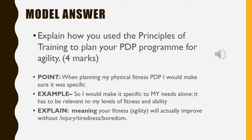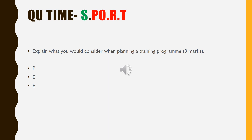Here's your model answer for using the command word 'explain.' The question is: 'Explain how you use the principles of training to plan your PDP program for agility' — or flexibility or speed. Your point: when planning my physical fitness PDP I would make sure it was specific. Your example: I'd make it specific to my needs alone — relevant to my levels of fitness and ability. Your explanation: meaning my agility, speed, or flexibility will actually improve without injury, tiredness, or boredom.